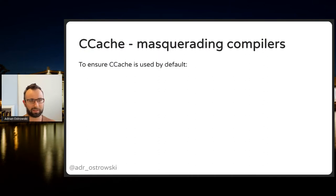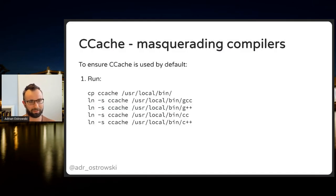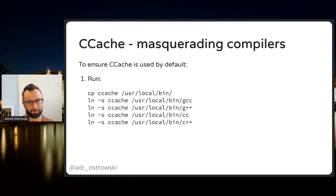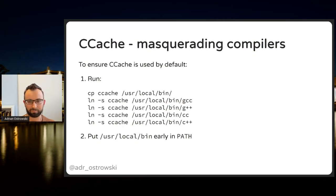To masquerade compilers, create or copy the Ccache binary into /usr/local/bin, then create symlinks in that directory so that calling /usr/local/bin/gcc actually calls Ccache. The tool knows which compiler was originally called and runs it accordingly. The second step is to put /usr/local/bin early in your PATH so that typing gcc finds this version. That's really all you need to use it by default.